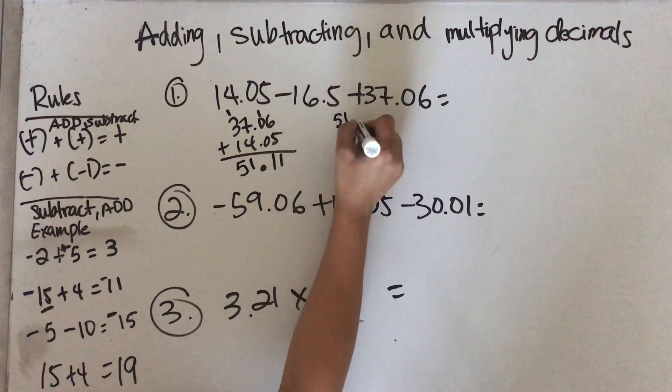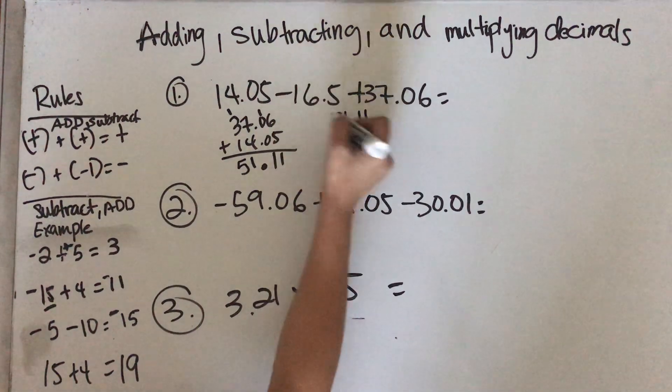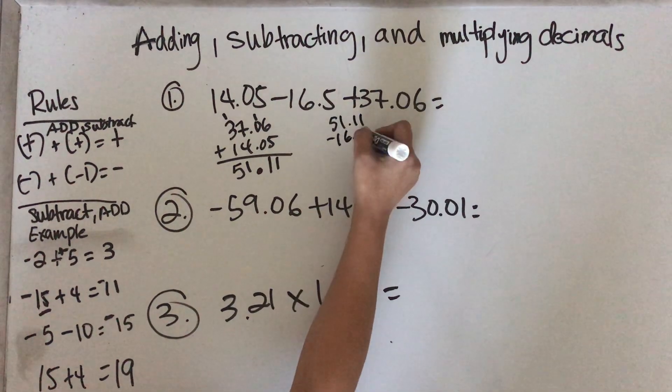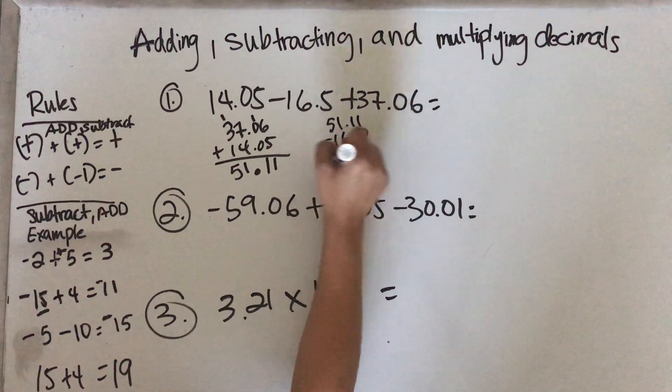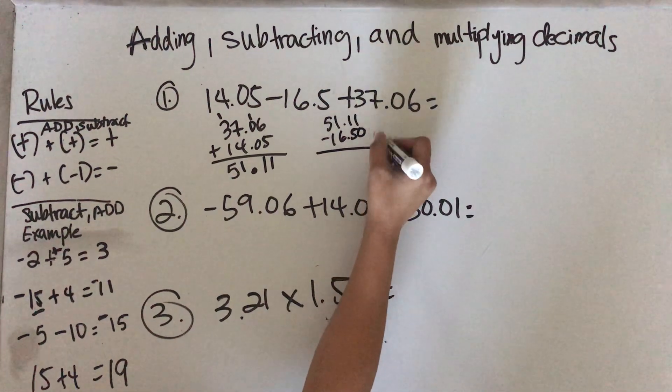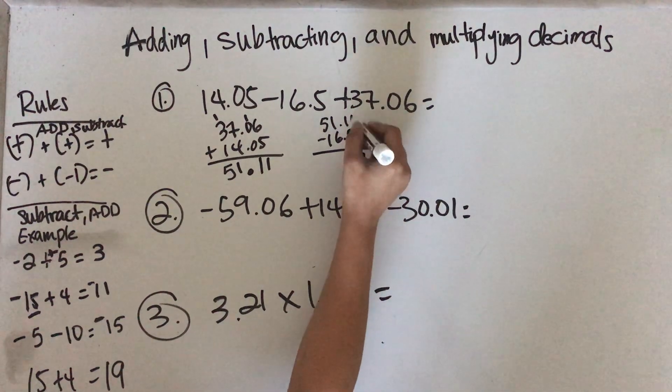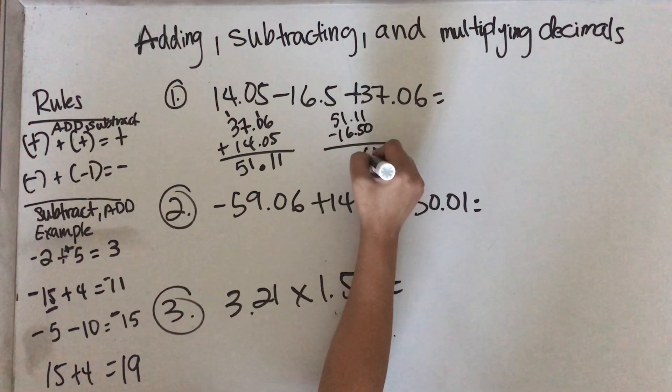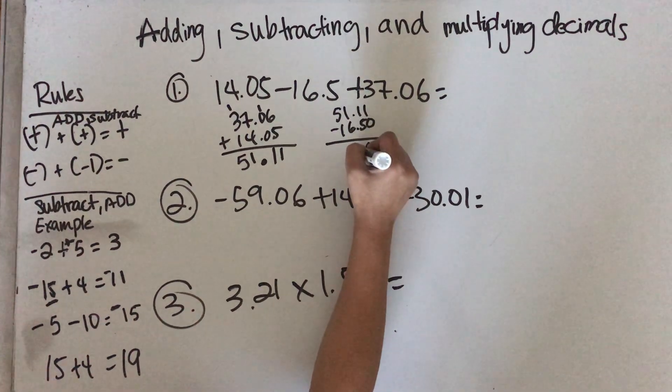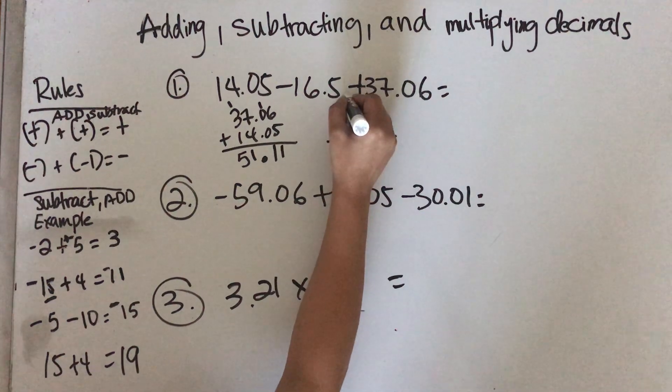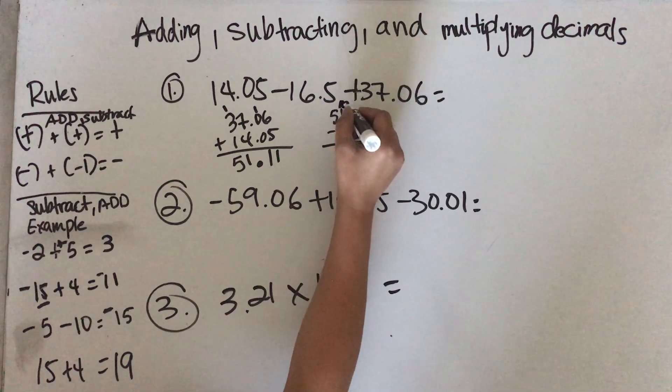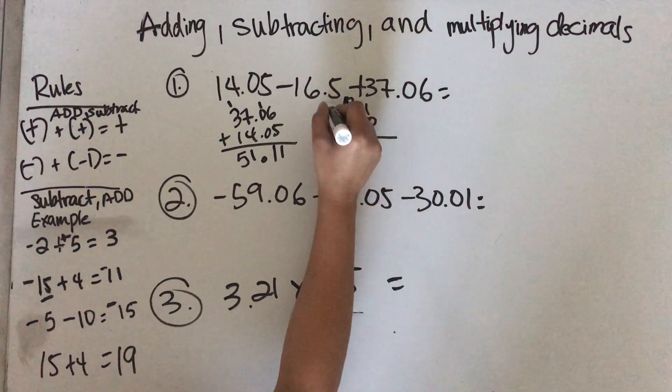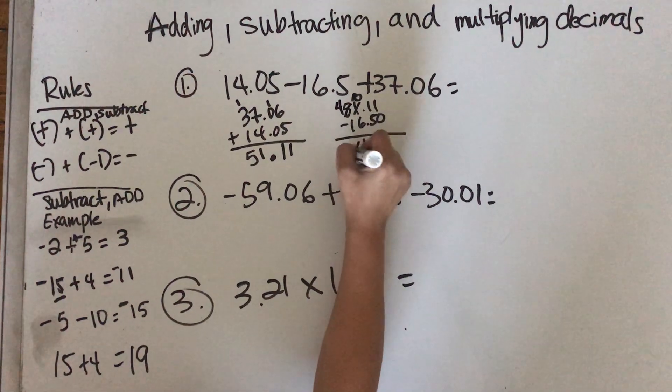Now take 51.11 and minus it by 16.5. 1 minus 0 is 1. 5 goes into 11 six times. Remember to align your decimal points. You're going to borrow from here so that becomes 10. 10 minus 6 is 4. Then you also have to borrow here, so it becomes 34.61.